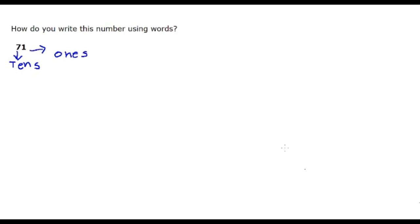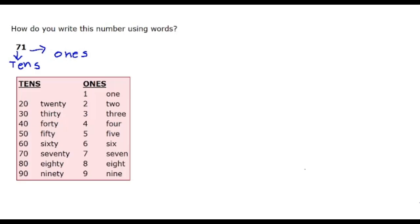The next thing you need to do is take a look at this chart. This shows you what the tens column looks like written out for each number and what the ones column looks like for each number written out. So we just need to locate for our number what 70 looks like. So here's 70, and then here's one. And that's what it looks like.